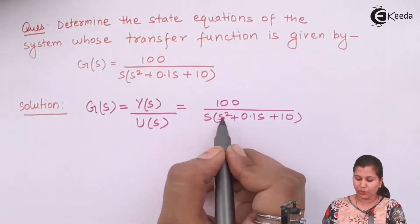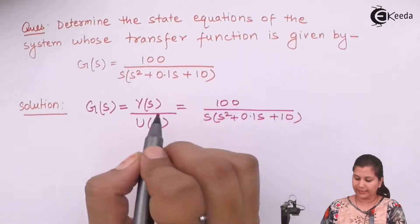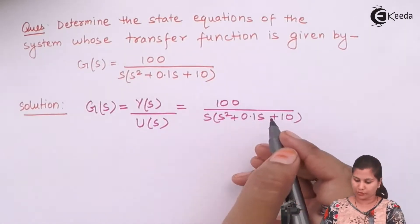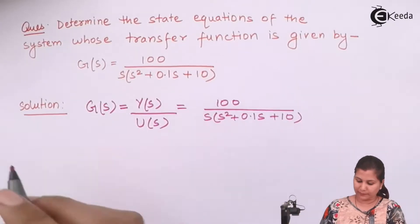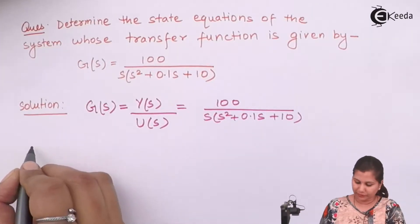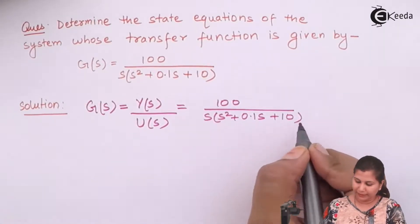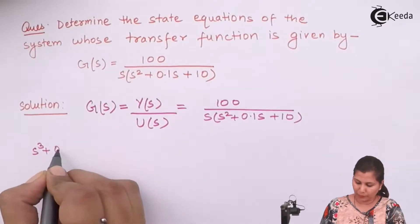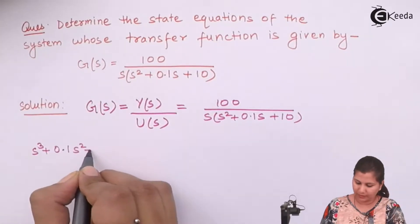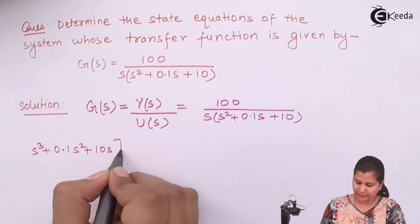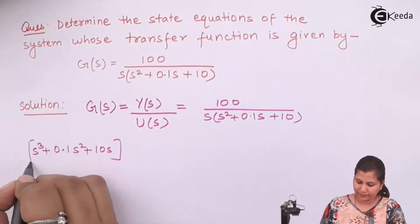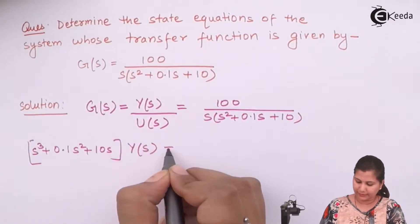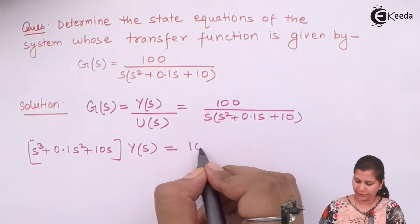Now we are going to cross multiply these and then take the inverse Laplace transform. Cross multiplying, we get S³ + 0.1S² + 10S, multiplied with Y(S), equals 100 U(S).